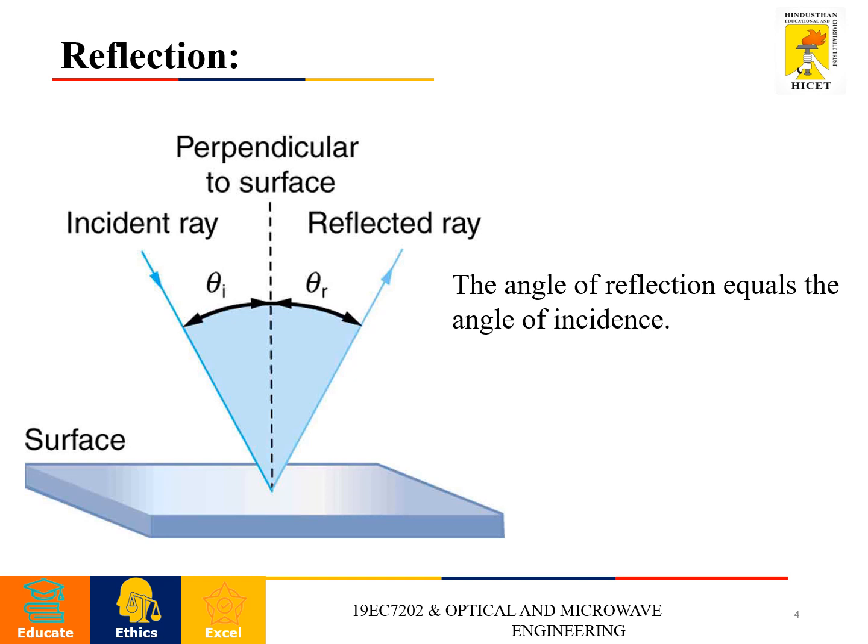First one: reflection. What is meant by reflection? The angle of reflection equals the angle of incidence. Let us take one surface and we are going to have an incident light ray which makes an angle to the perpendicular axis theta i, and the reflected ray is theta r.